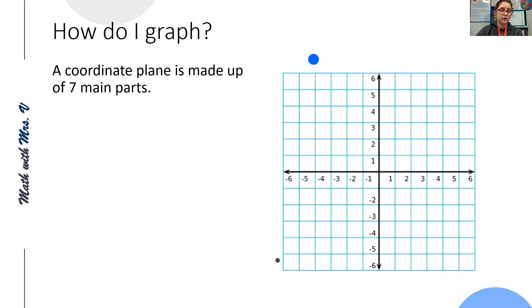So how do we graph? A coordinate plane is made up of seven main parts: the x-axis and the y-axis marked by the dark black lines on the graph, the origin, which is where the x and y-axis cross each other and our starting point for when we graph, and the four quadrants 1, 2, 3, and 4.